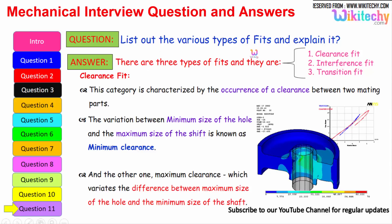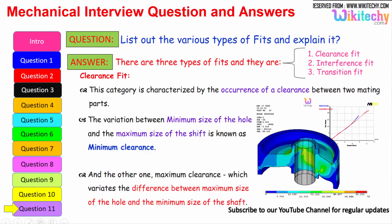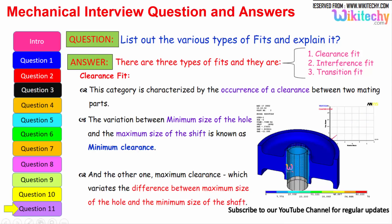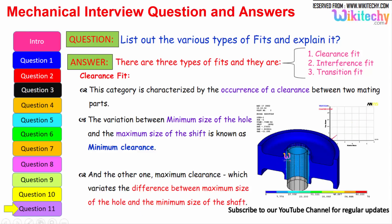Let us see the final question. List out the various types of fits and explain it. There are three types of fits available: clearance fit, interference fit, and transition fit. Clearance fit is characterized by the occurrence of clearance between the two mating parts. The variation between the minimum size of the hole and the maximum size of the shaft is known as minimum clearance, whereas maximum clearance is the difference between maximum size of the hole and minimum size of the shaft. That is your clearance fit.